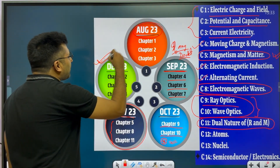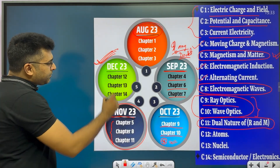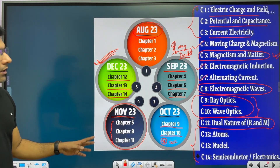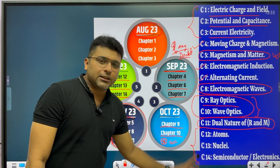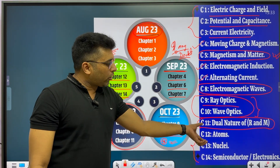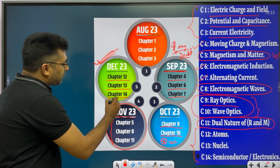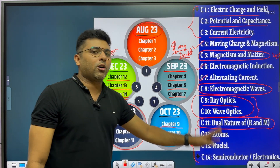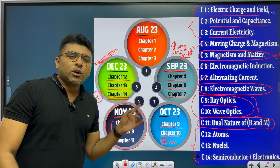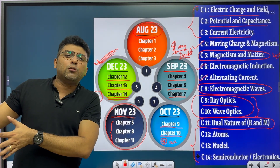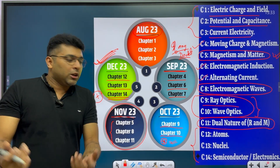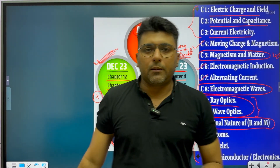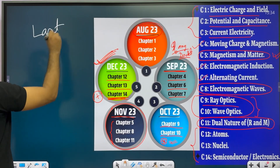And for December, the chapters are Chapter 12, Chapter 13, and Chapter 14. What are these? Chapter 12, Chapter 13, and Chapter 14 — the last three chapters. These are very easy chapters, very interesting. And the last chapter, Chapter 14, is Electronics. These are easy and manageable chapters to finish in December.